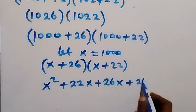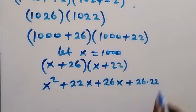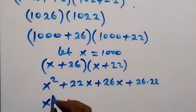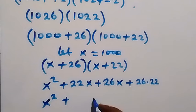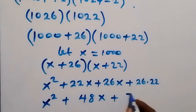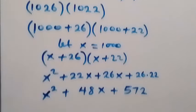We can simplify again and we have x squared plus, adding this together, we have 48x plus when we multiply this we get 572.